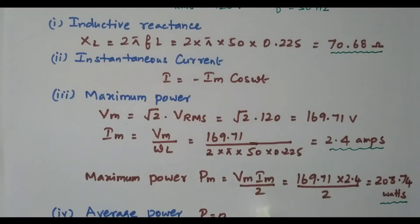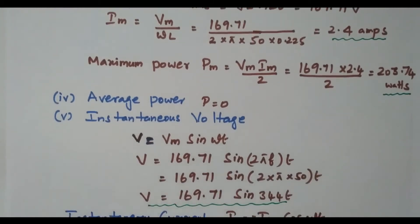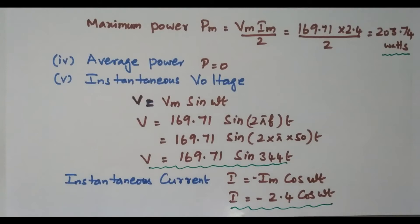From Vm and Im we calculate maximum power: Vm × Im / 2 = 203.74 watts. The average power for an inductive circuit is 0. The instantaneous voltage equation is V = 169.71 sin(2πft) = 169.71 sin(314t). The instantaneous current is I = −Im cos(ωt) = −2.4 cos(ωt). The current is lagging, hence the negative sign.